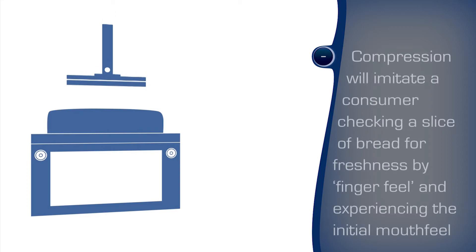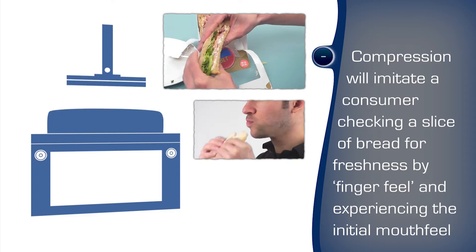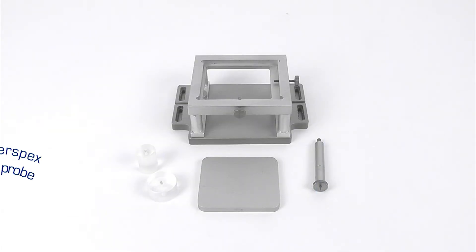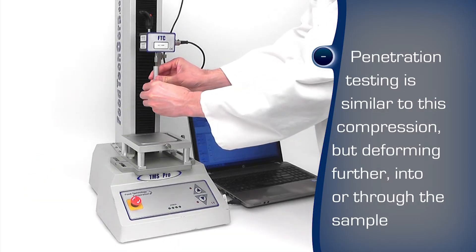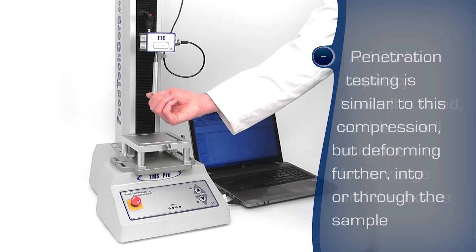Compression is one representative method for the simulation of a consumer checking bread for freshness by finger feel and experiencing the initial mouth feel. Penetration testing is similar to this compression but deforming further into the sample. The TMS texture analyser is fitted with a small diameter cylinder probe to compress the bread in a localized manner, as would a consumer.